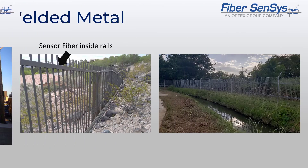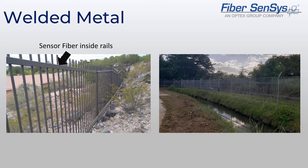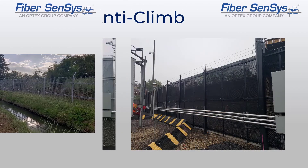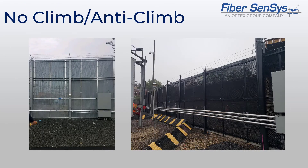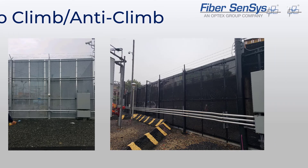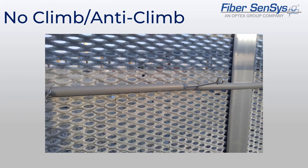Fences such as chain link, palisade, rock iron, welded mesh, and anti-climb types have all been successfully secured from intrusion. These images show the various fences to which the Fiber Defender products have been applied.